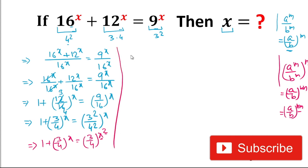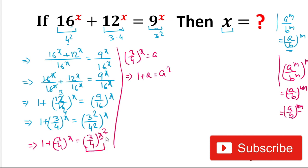We can also write (3/4)^(2x) as [(3/4)^x]². Now let a = (3/4)^x. Our new equation becomes 1 + a = a². We have substituted (3/4)^x as a, and since it is squared on the right side, we write a².